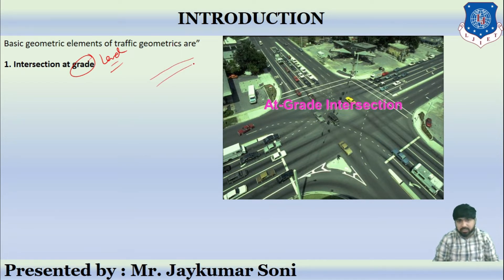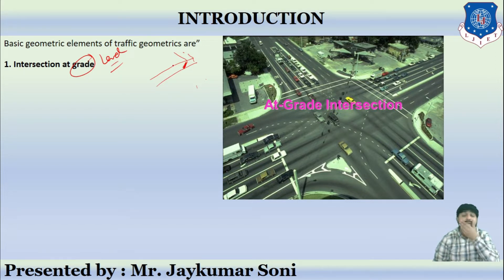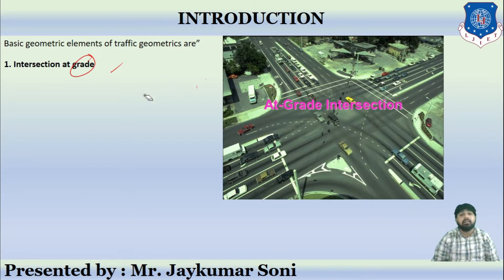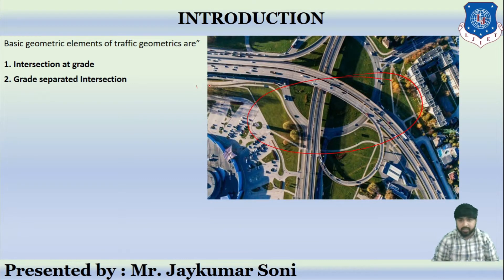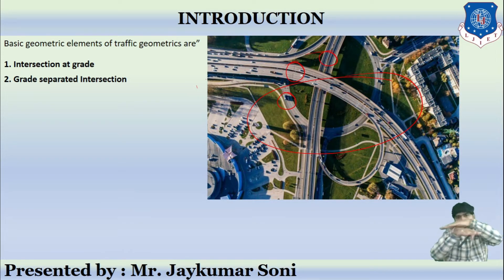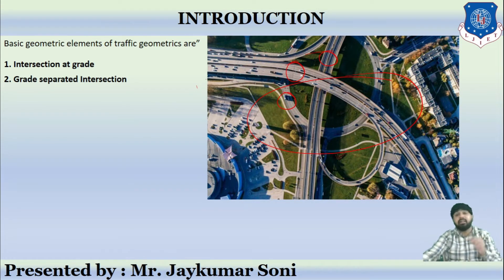If one particular intersection is at one level and the other is above that level — there is a difference between these levels — then it is not called as intersection at grade. It is called as grade-separated intersection. If the levels are the same, then that is called as intersection at grade. Grade-separated intersection is where the level of one road and the level of another road are quite different — the roads are crossing at various levels.